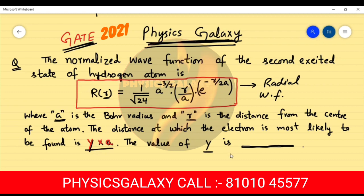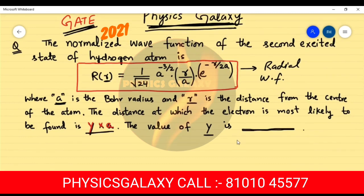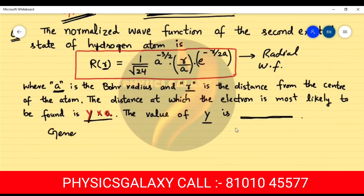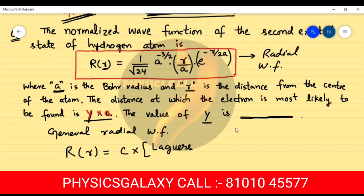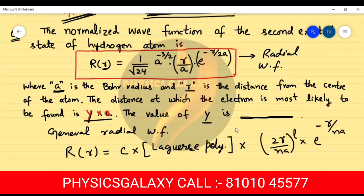First, we will compare this radial wave function with the general wave function for a hydrogen atom. The general radial wave function for a hydrogen atom is given by R(r) = C × (Laguerre polynomials) × (2r/na)^l × e^(-r/na). Comparing with our given function, there is no Laguerre polynomial term, so the Laguerre polynomial is missing here. The constant part C corresponds to the given prefactor.